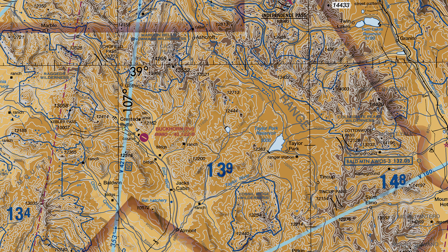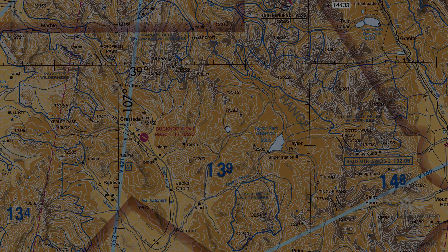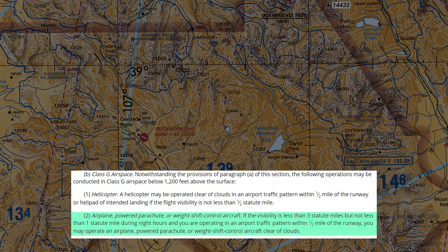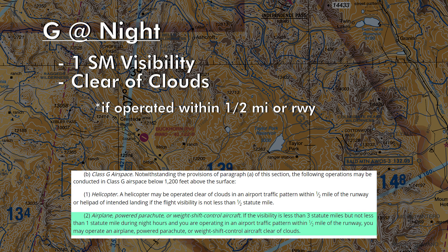There's a little special rule with Class Golf airspace, and that's at night. If you are in a traffic pattern at night within one half mile of the runway, your visibility can be one mile and you can stay clear of clouds. So you can practice your takeoffs and landings at a Golf airport at night with one mile visibility and clear of clouds.